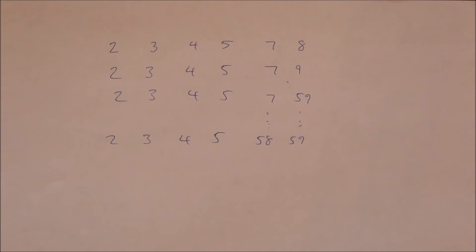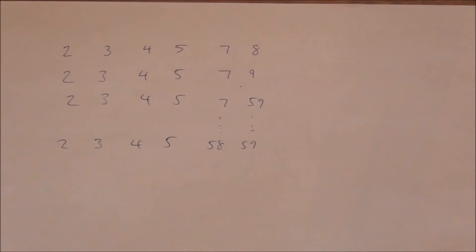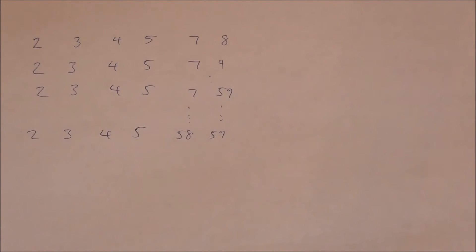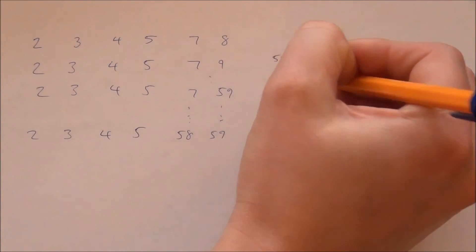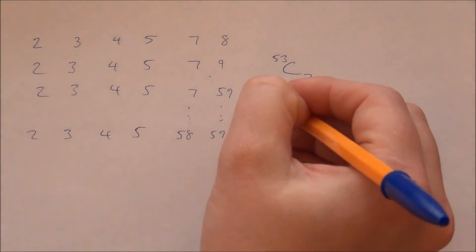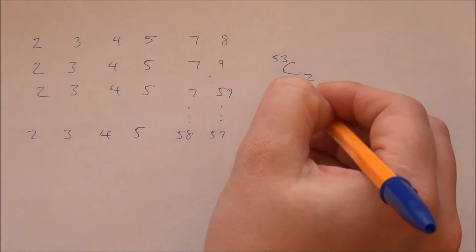So, we can have any number higher than 7, which gives us 53 possible numbers to choose from. I'm going to pick 2, so it's 53 choose 2, and that is 1,378.